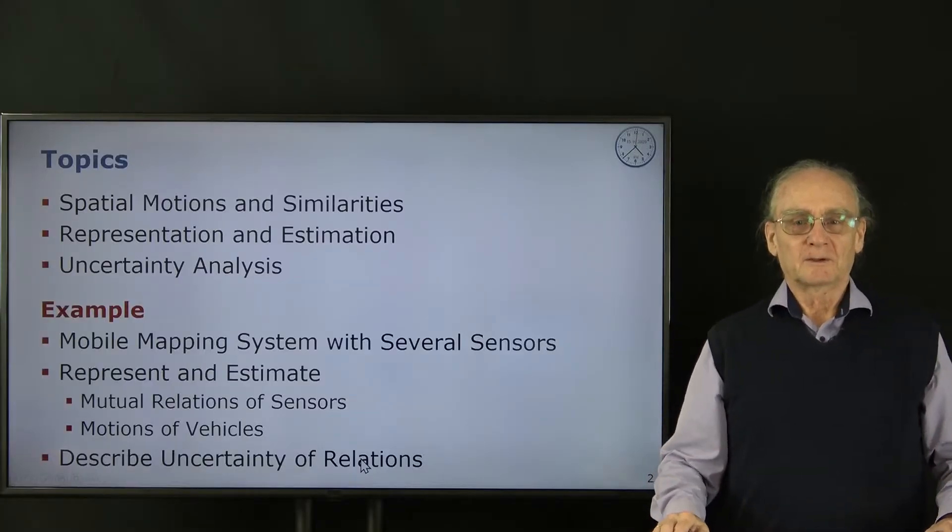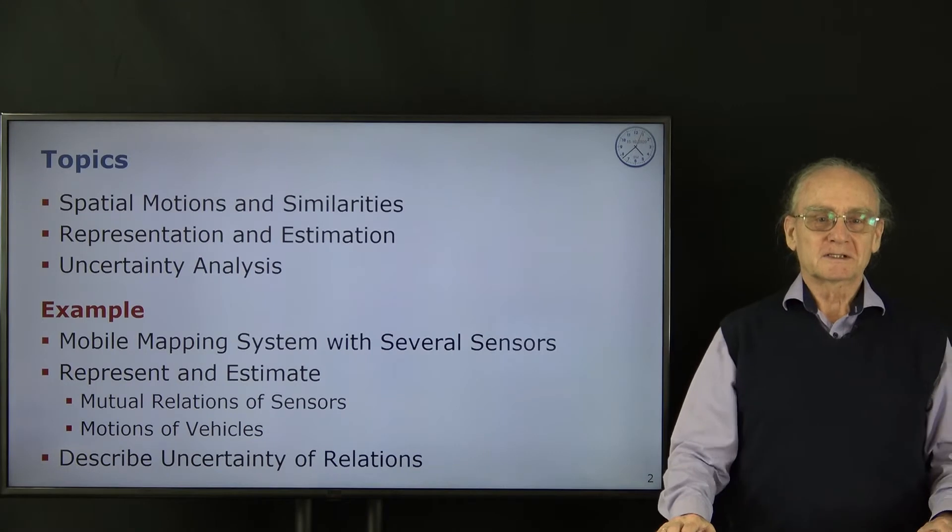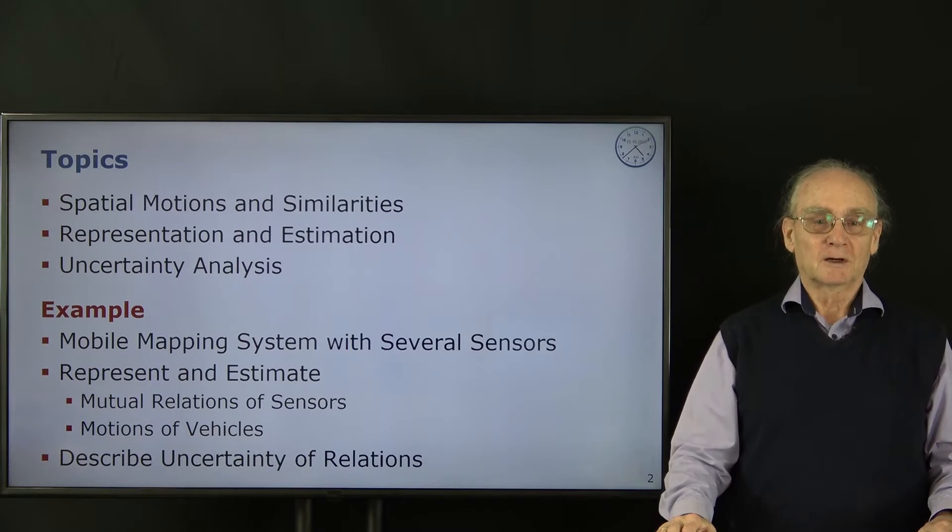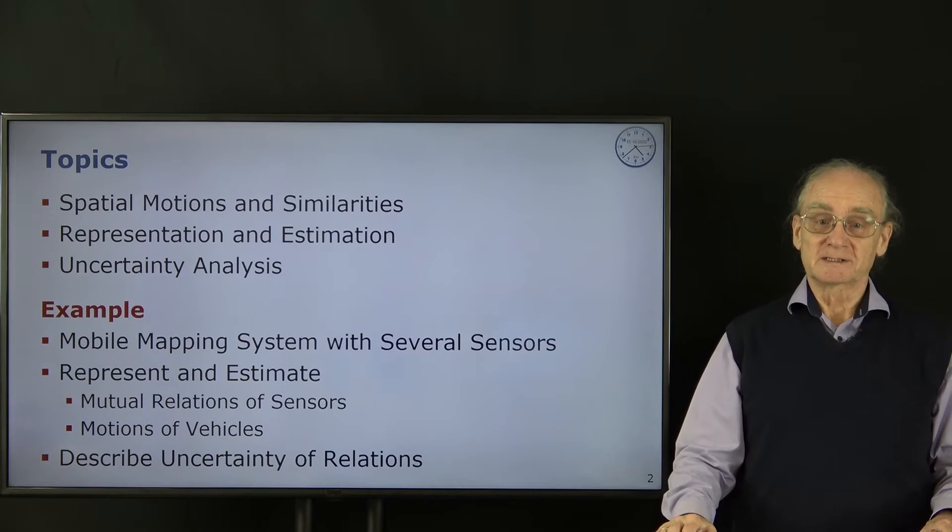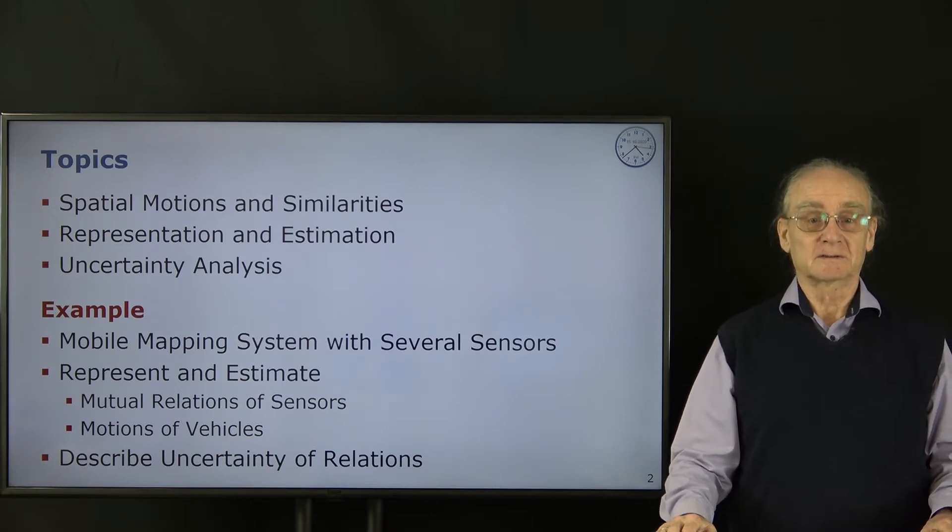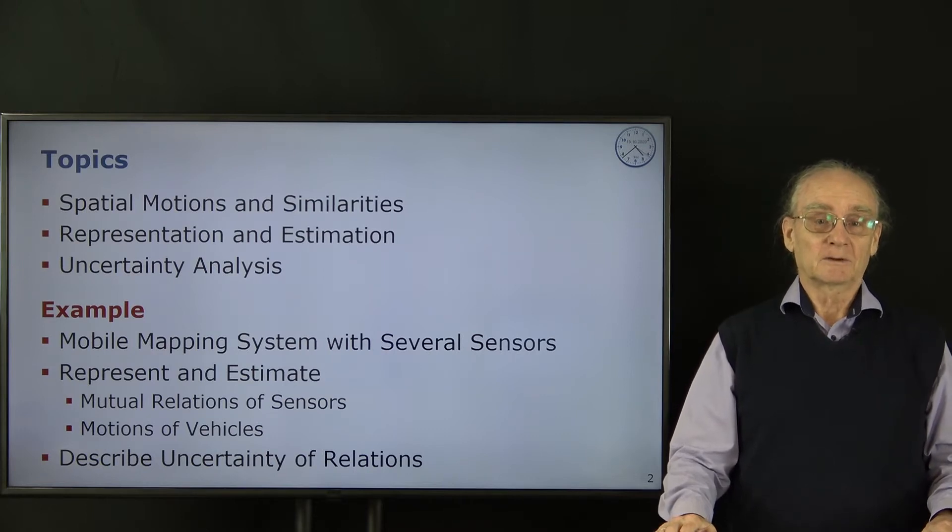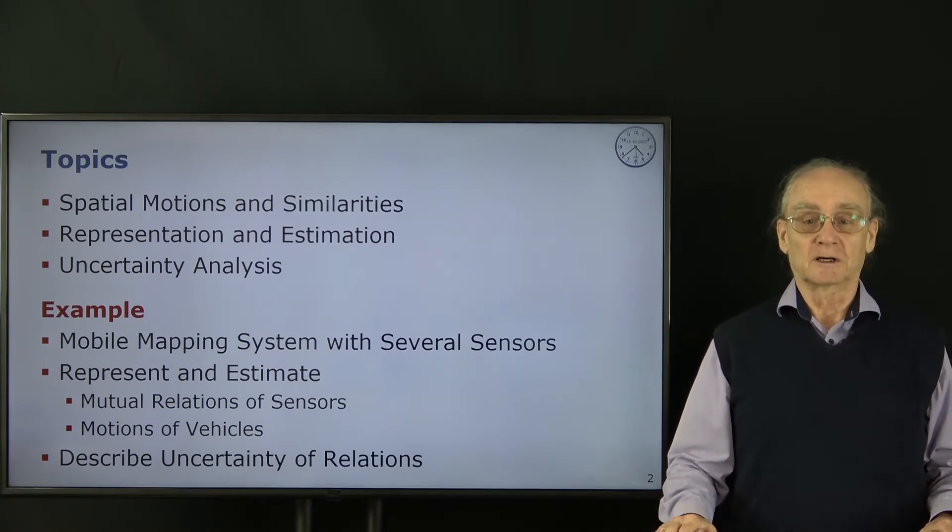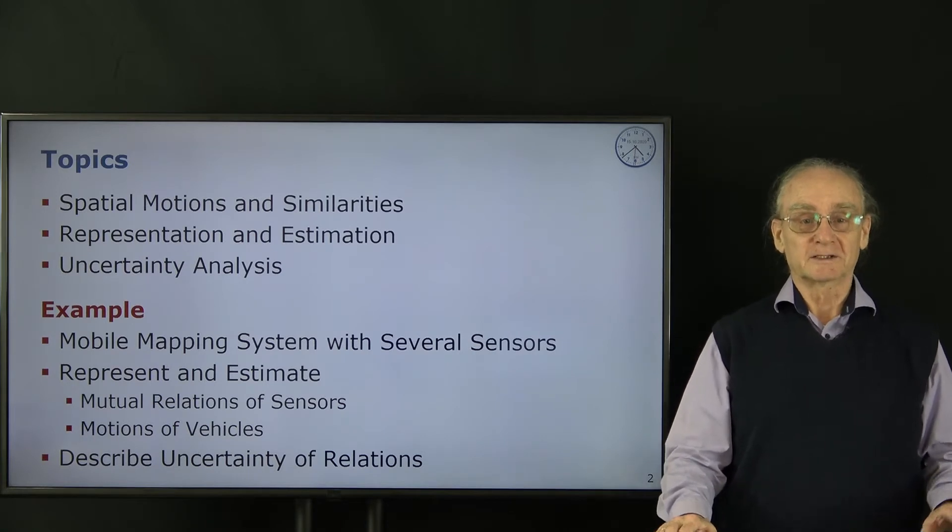We have three main topics. We will discuss the geometry of spatial motions and similarities, look into how to represent them and how to do estimation - that means estimating these motions and similarities from observed data. And we will always have a look into the uncertainty of these data. Our basic observations are uncertain, so the results will be uncertain, and we have to look into how to track this through the whole chain.